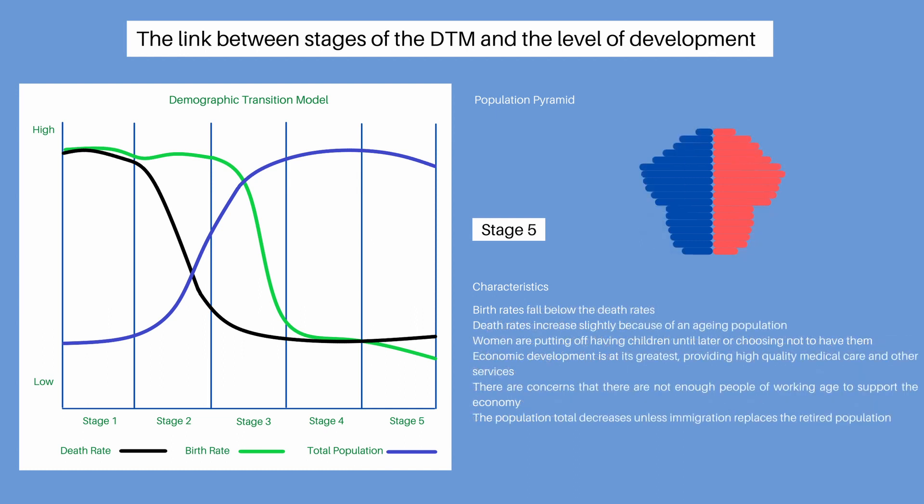In stage 5, the birth rate falls below the death rate. Death rates increase slightly because of an ageing population. In general, women are putting off having children until later, or choosing not to have children. Economic development is at its greatest, providing high quality medical care and other services. But there are concerns that there are not enough people of working age to support the economy. The population total decreases unless immigration replaces the retired population. The population pyramid now has a narrow base, showing that birth rates are very low. The upper bars are much wider, indicating a greater proportion of the population are older and are living long lives.